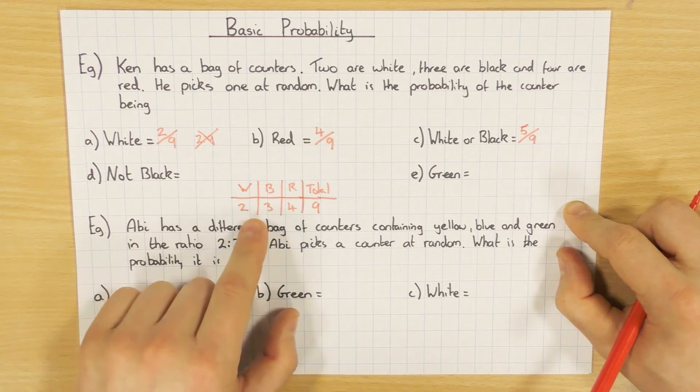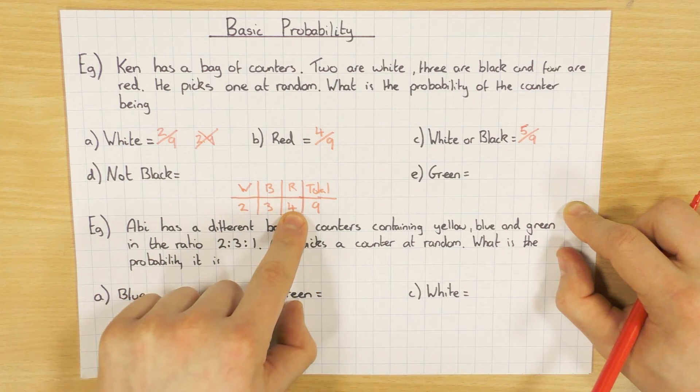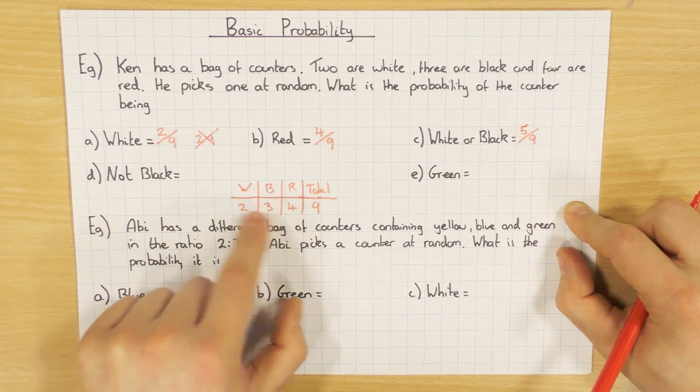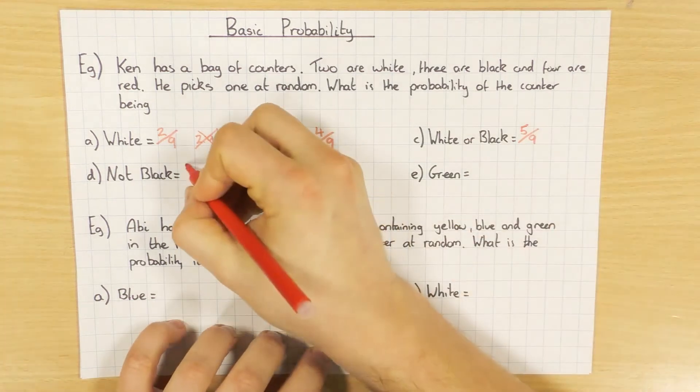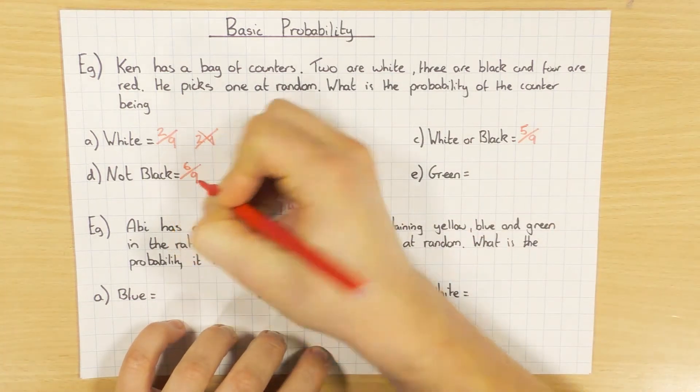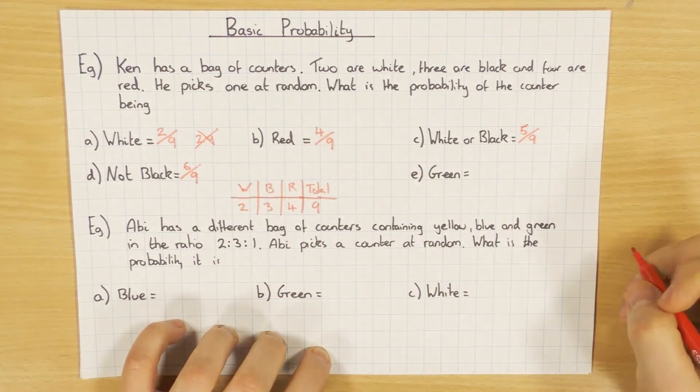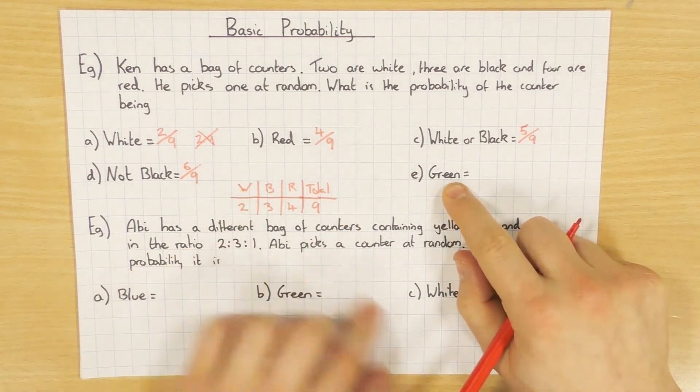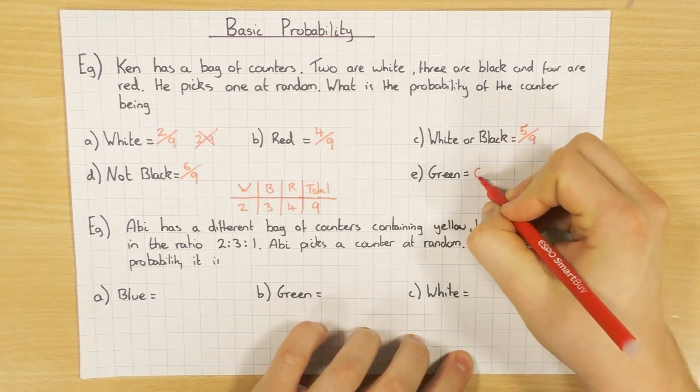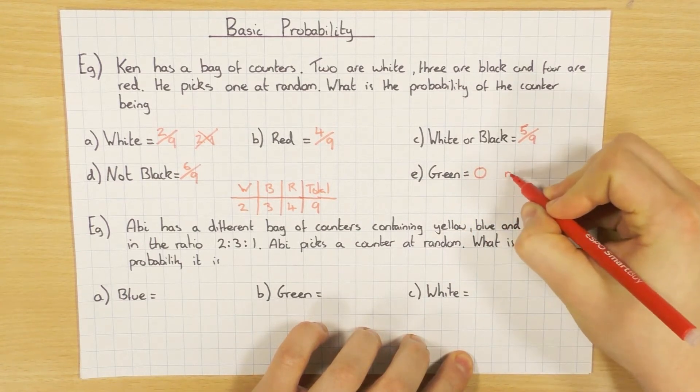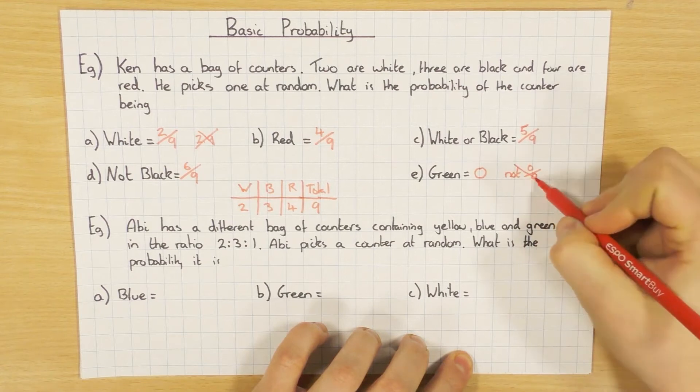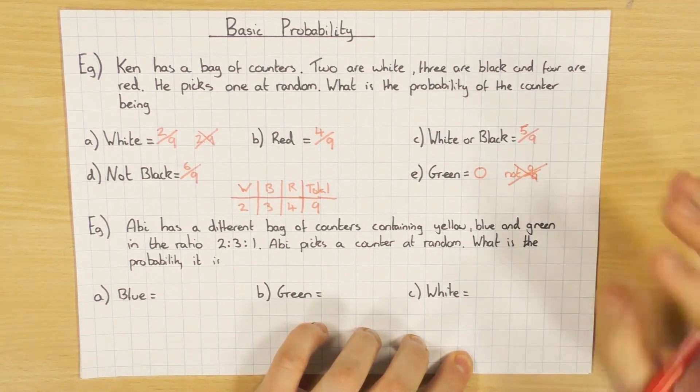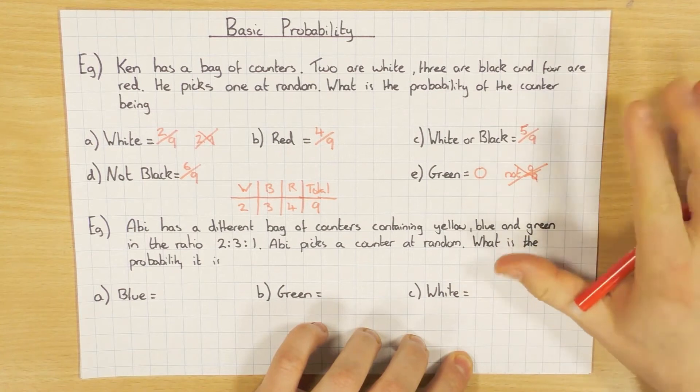Not black. Well, the ones that aren't are white and red. So two are white and four are red. So add them together. There's six counters that are not black. So that's six out of nine. And last but not least, what's the probability of getting a green? Well, there's no green at all. So we said that probability there is zero. Not zero out of nine. You can lose marks for doing that. Just put zero. There's no chance of it happening.